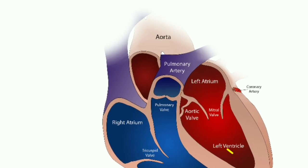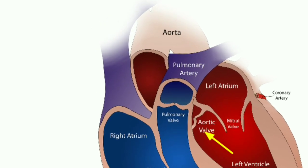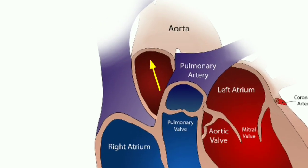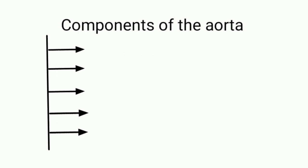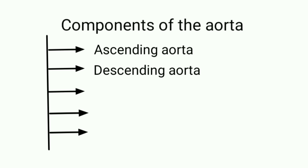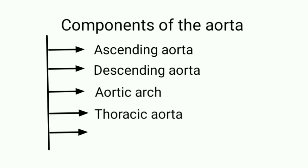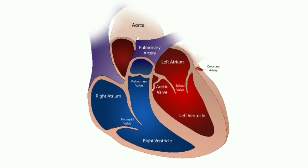The aorta: the aorta is the largest artery in the body. Oxygenated blood is pumped from the left ventricle through the aortic valve into the aorta. The aorta has many subdivisions that branch off into smaller arteries. These subdivisions are the ascending aorta, descending aorta, aortic arch, thoracic aorta, and abdominal aorta.